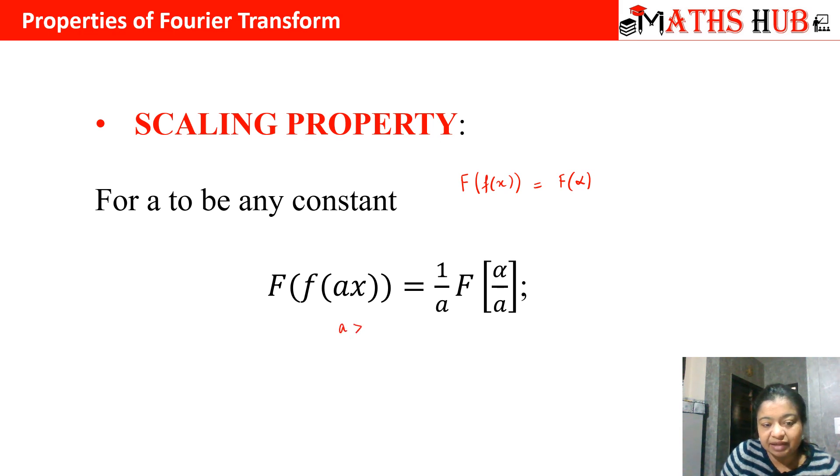So a is greater than 1 when we are making it bigger in size and a is less than 1 when we are making it small. That is the meaning of the scaling property. We divide by the scaling factor and in your Fourier transform we change alpha to alpha by a.